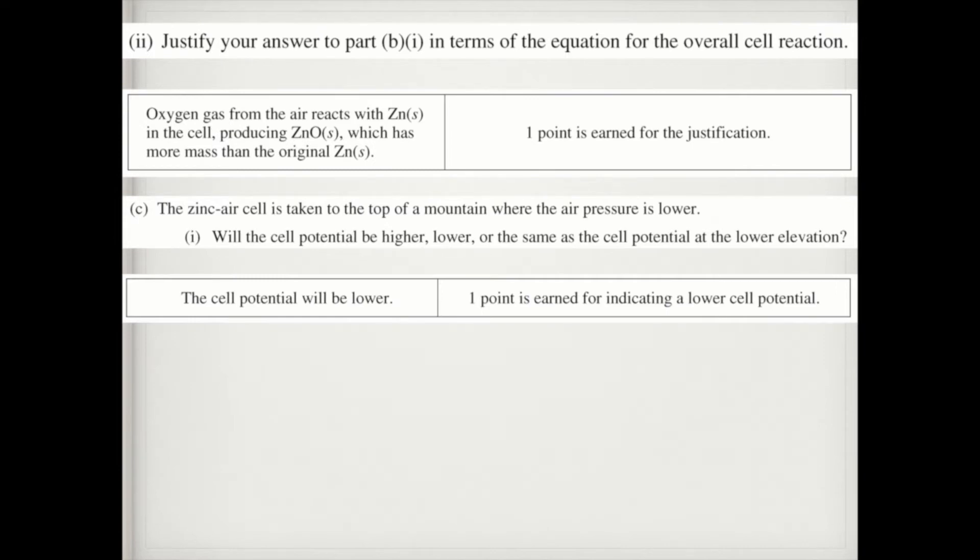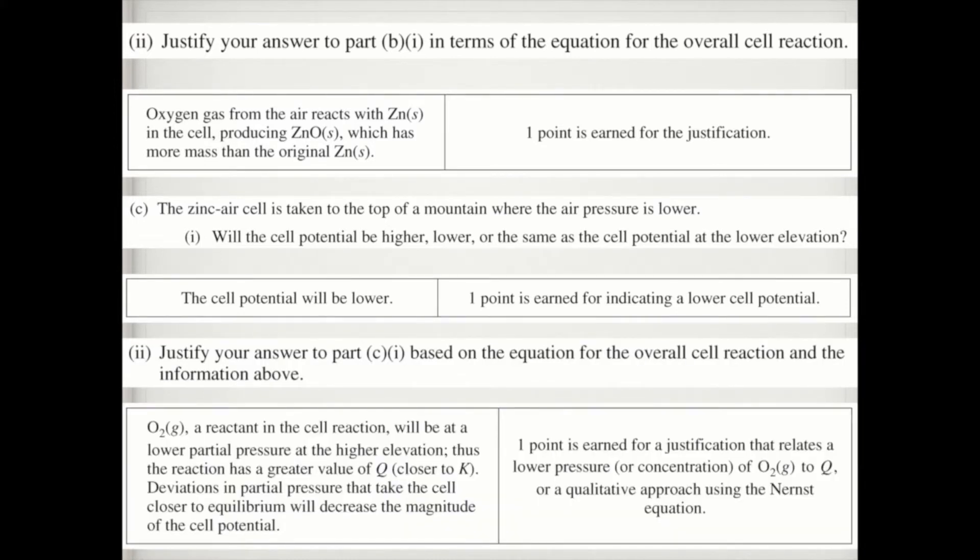So first of all, it's going to be lower. And notice it doesn't want an explanation why you just get one point for the answer. And then it says justify your answer. Well, that's because since you decrease the amount of reactant, your Q is going to be larger than your K, which means that the cell potential, since you're proceeding towards the reactants, your cell potential is going to decrease. So you've got one point for justification talking about Q or the Nernst equation, which we didn't go over. So talk about Q.